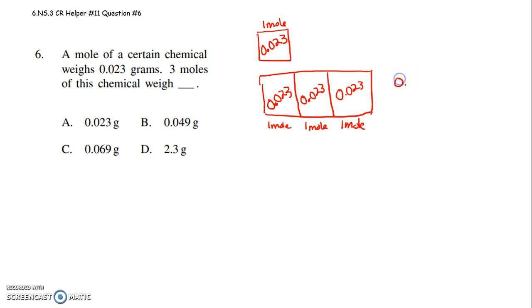You could either do 0.023 plus 0.023 plus 0.023, or you could do 0.023 times 3.